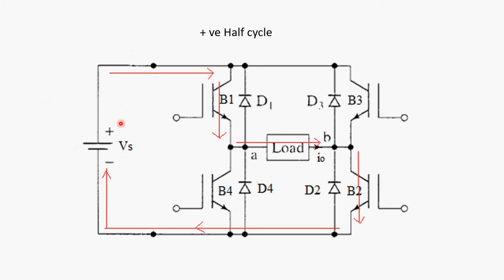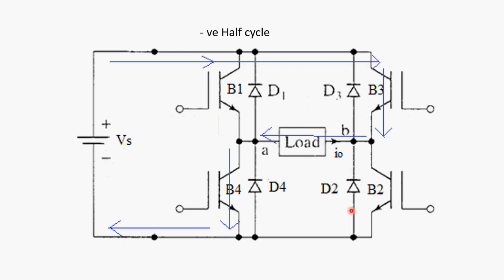After time T1 or after time T by 2, we are going to turn off both devices, IGBT B1 and IGBT B2. And we are going to turn on the other devices or remaining devices that we have in the circuit, IGBT B3 and B4. We are going to turn on B3 and B4.